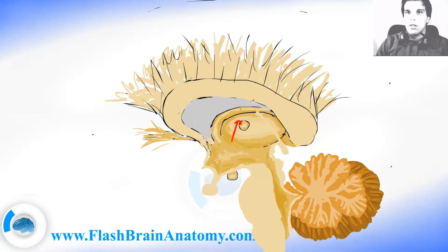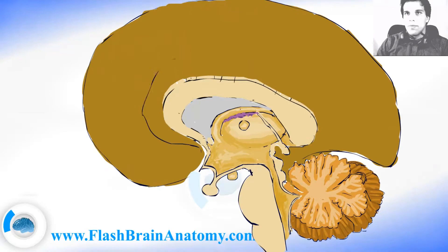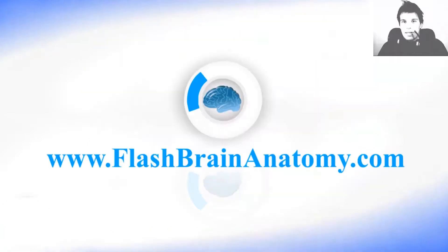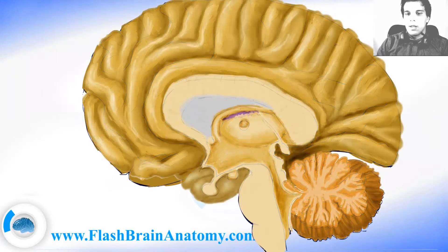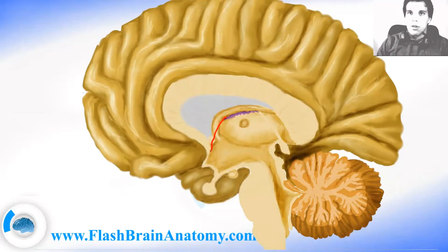Here at the top of the third ventricle we should be able to see the telochoroidia. The rest of the brain — the telencephalon — with all its gyri and sulci on the surface. After photoshopping it a little bit, this is what we get. This part here is the third ventricle, then we have the aqueduct, and then comes the fourth ventricle.